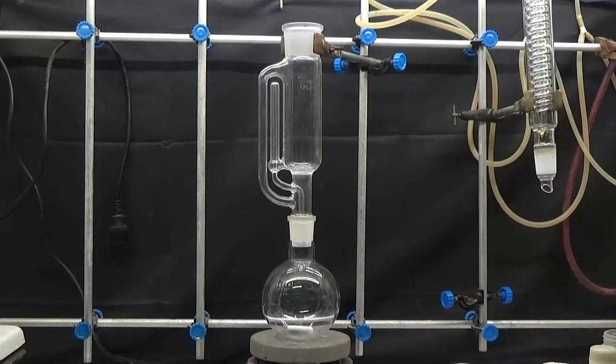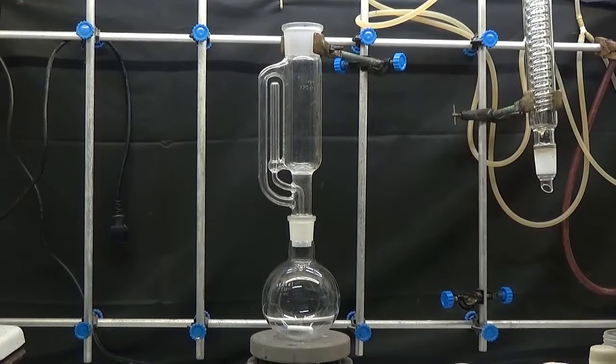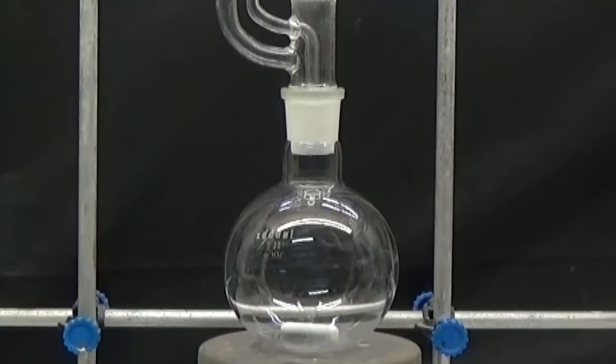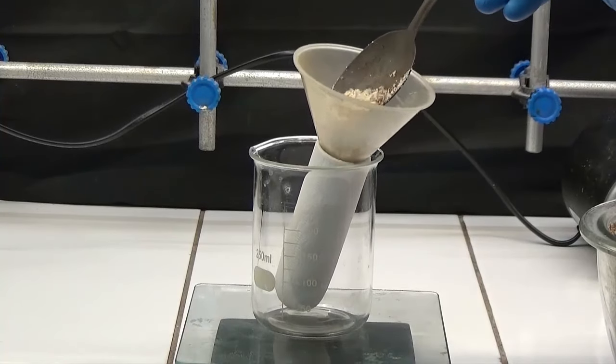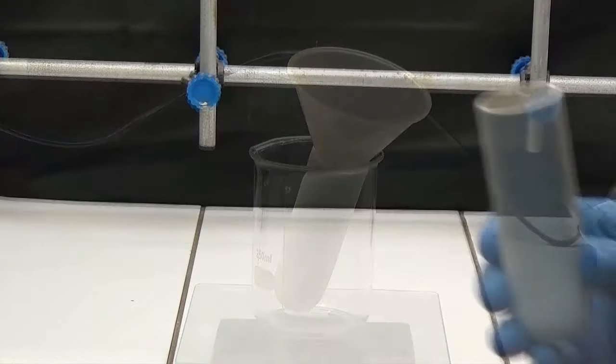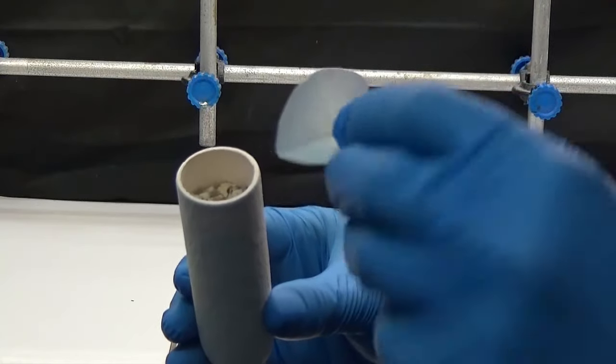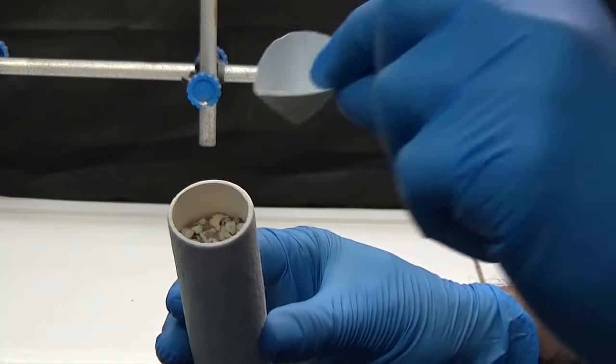We put in place a Soxhlet extractor with a 500 milliliters flask to extract all the fat from the seeds. Load the filter cartridge with 30 grams of raw material. To prevent material from being removed from the cartridge, cover with filter paper.